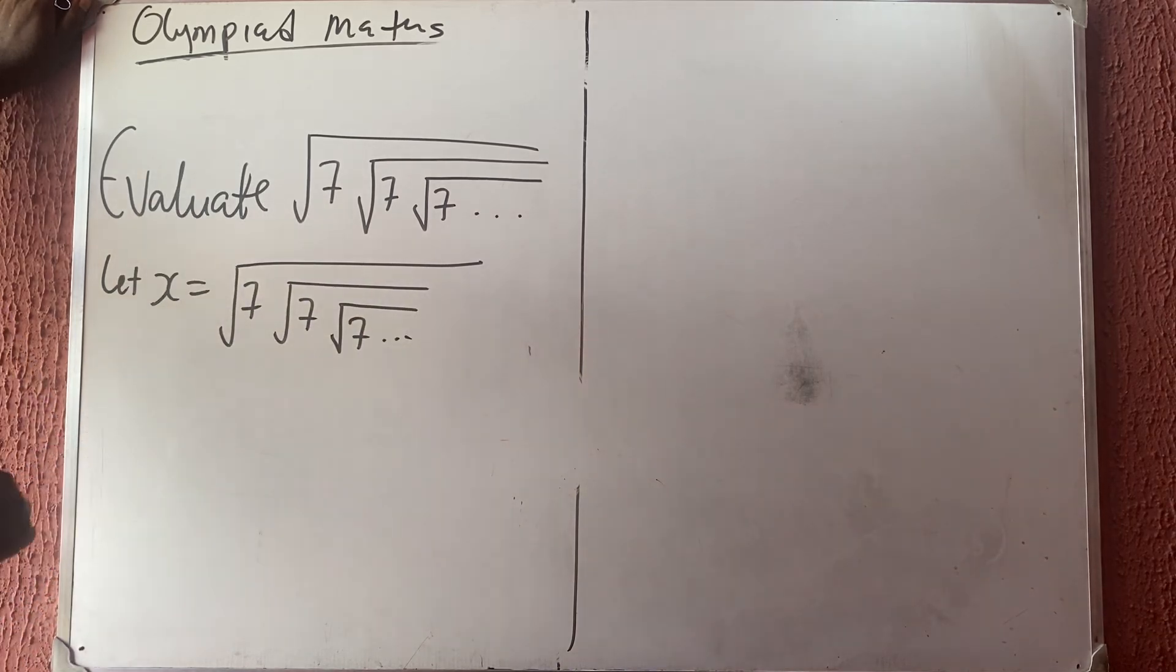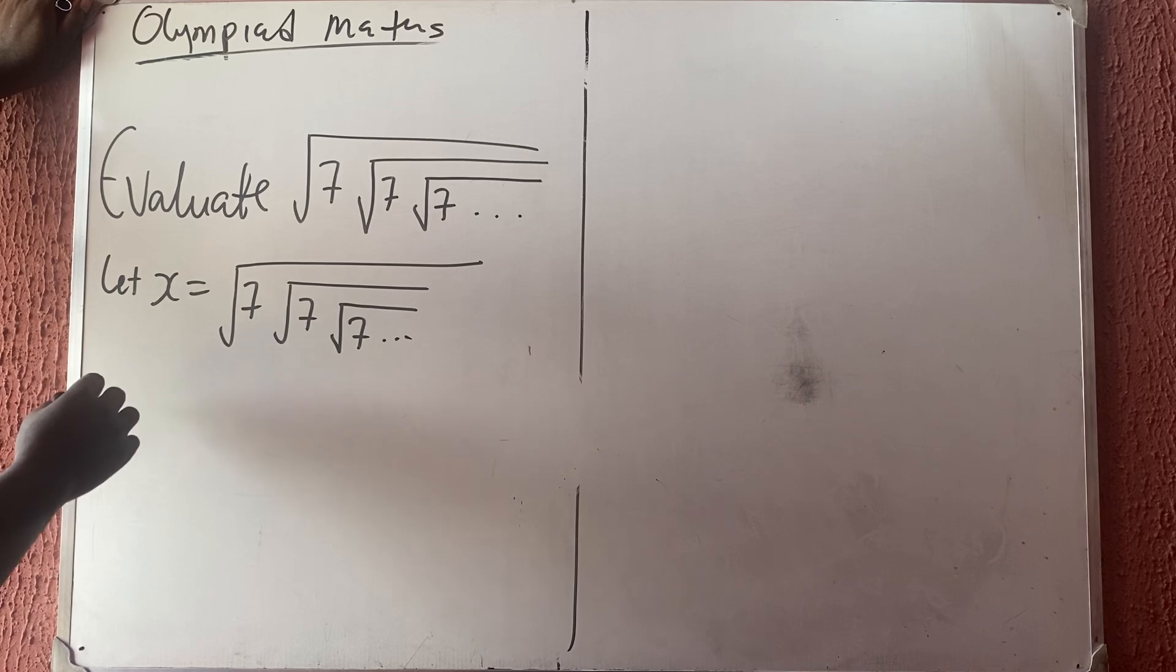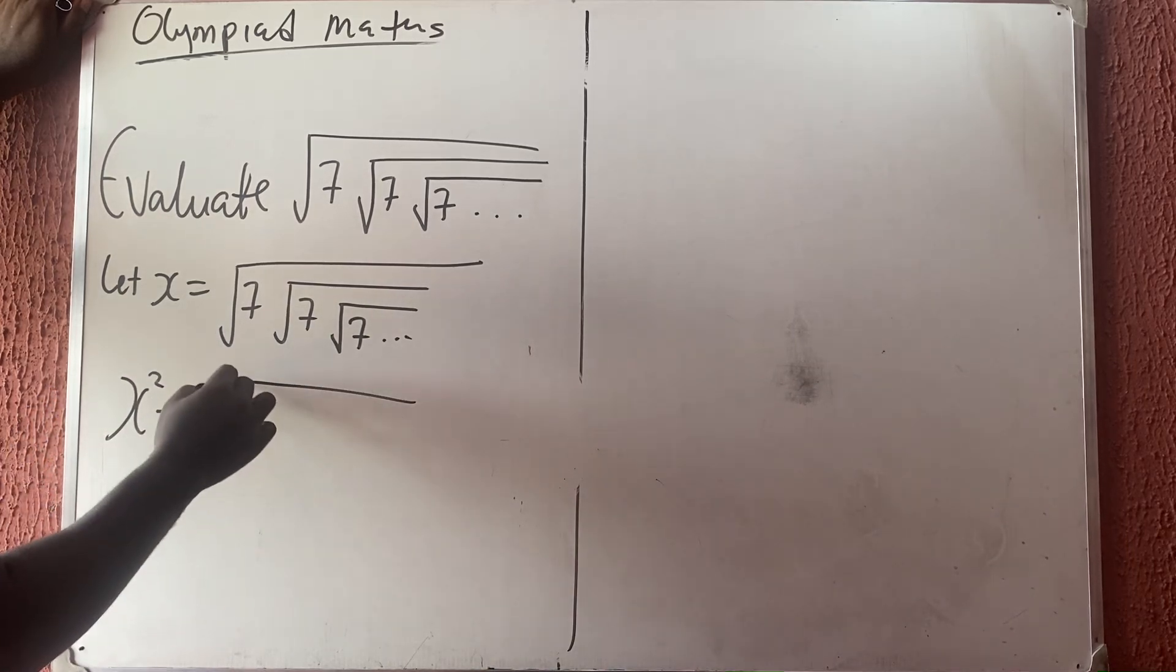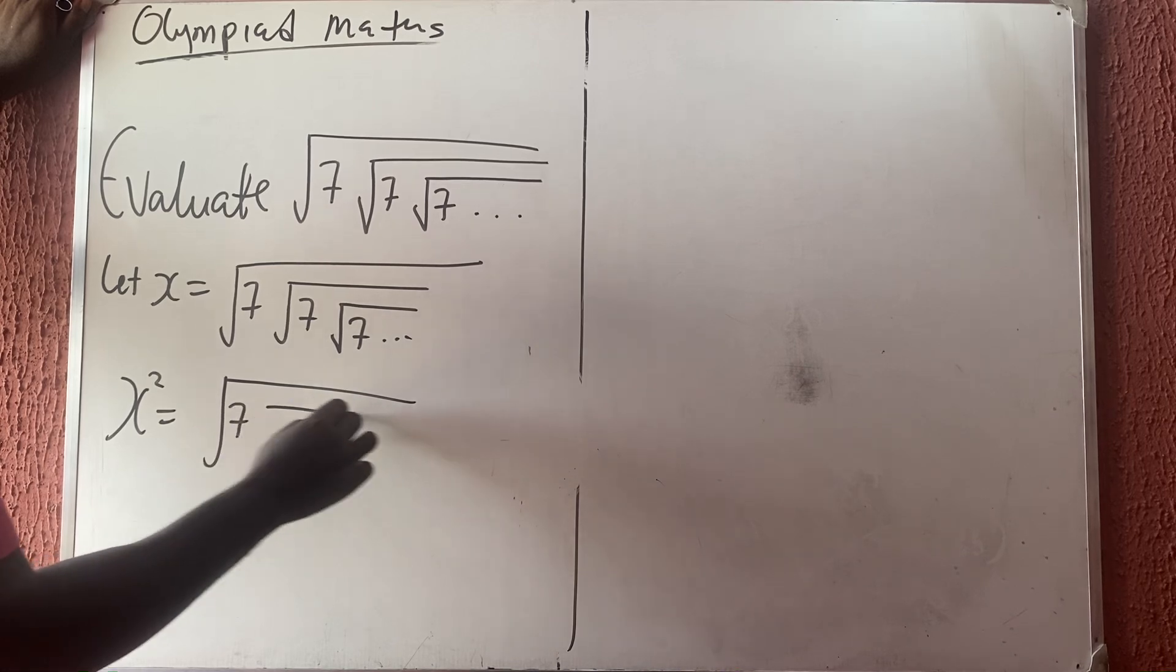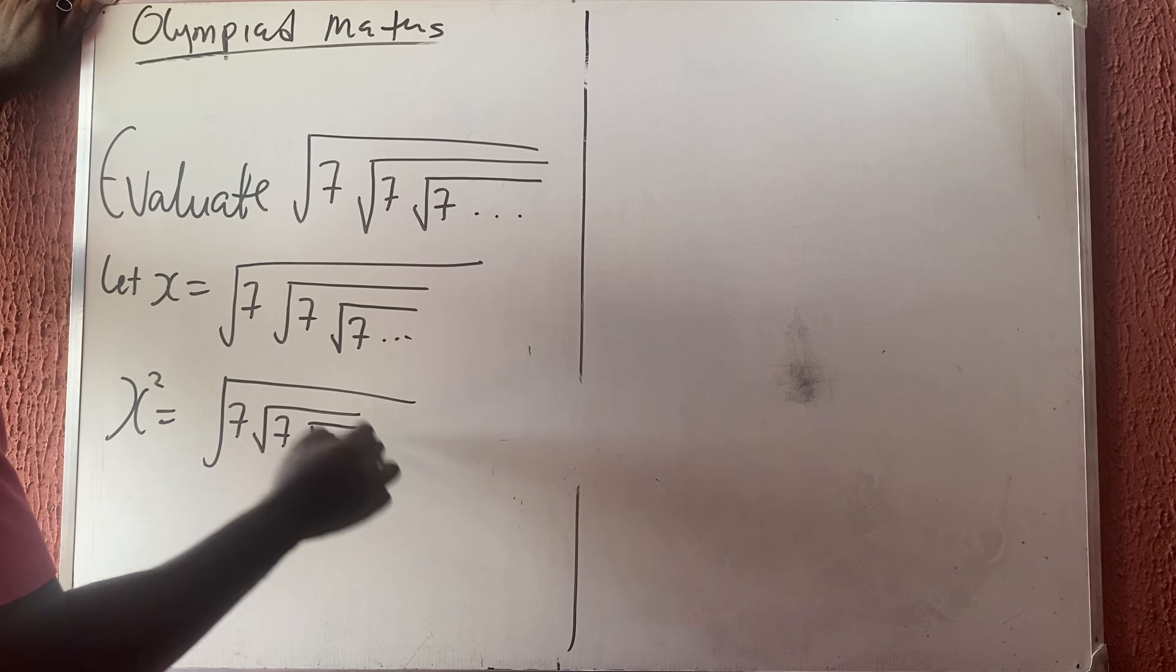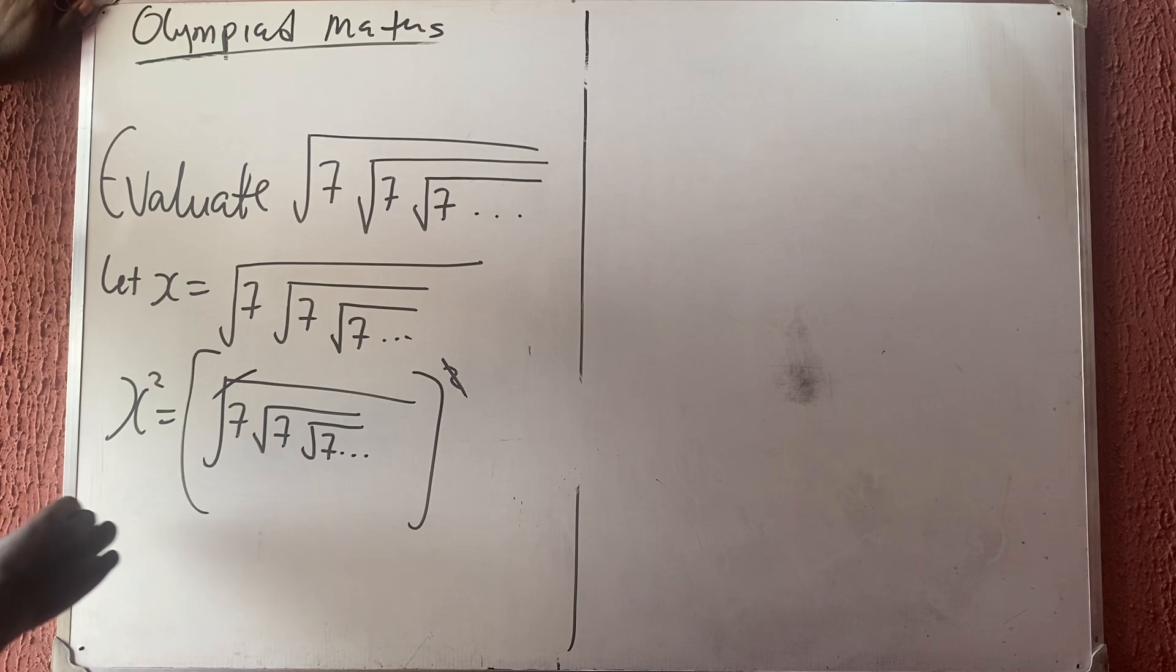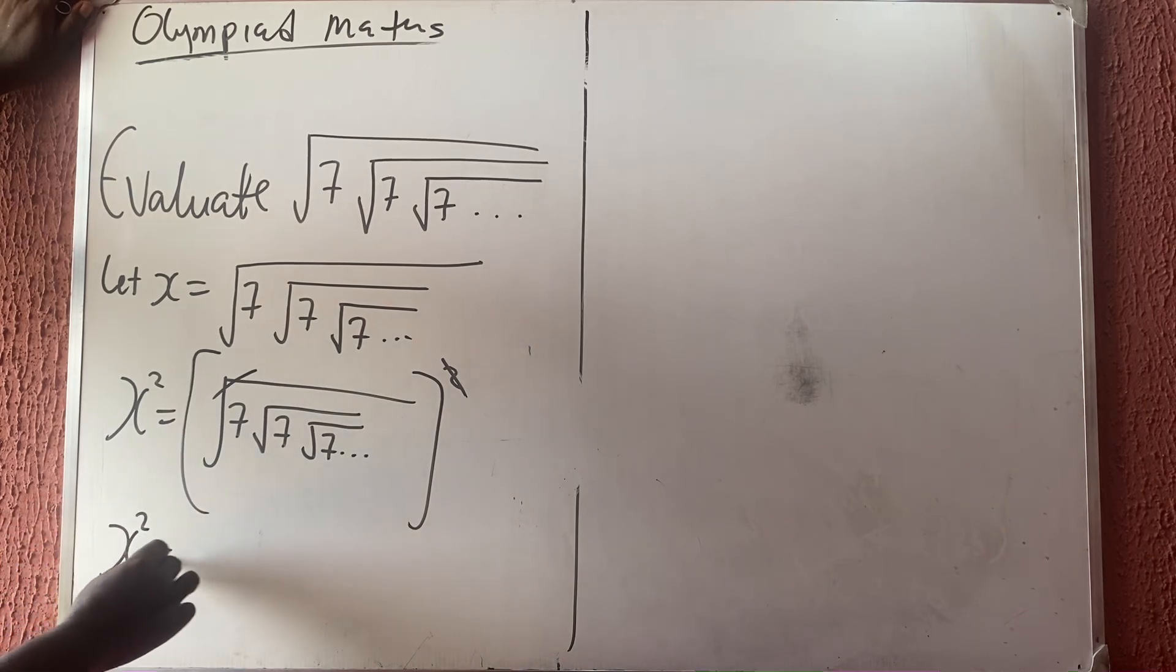Now if I square both sides, I'm going to have x² equals square root of 7, square root of 7, square root of 7, that continues to infinity, all squared. This will take care of the one outside here, so x² is equal to what?